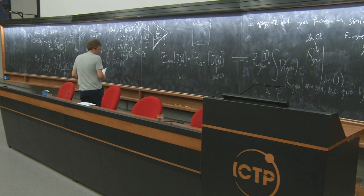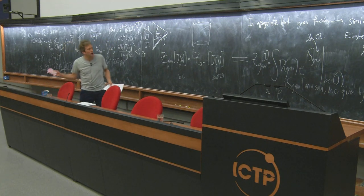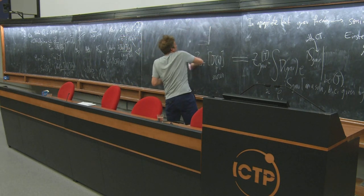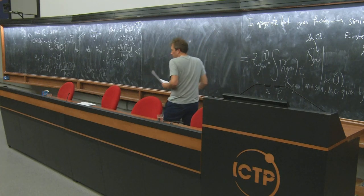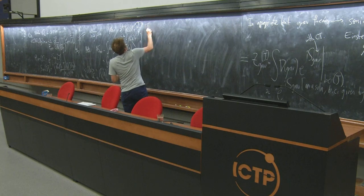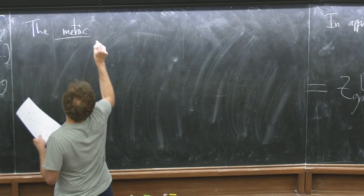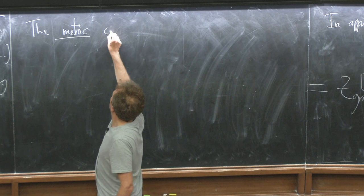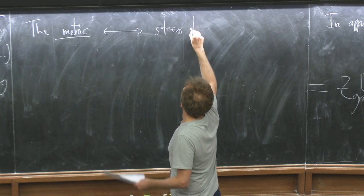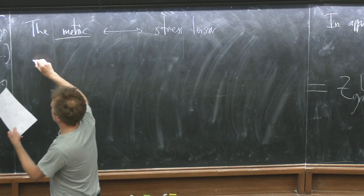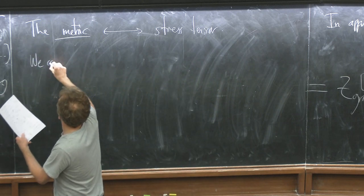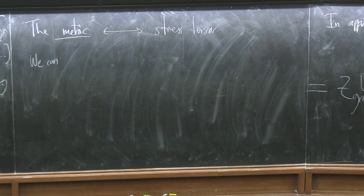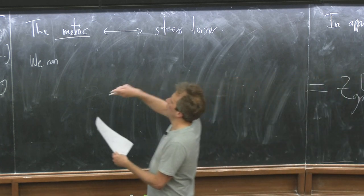Now I want to say something about the metric. The metric is dual to the stress tensor, and the metric is rather special. Let's think about how what we did for the scalar field would translate for the metric.